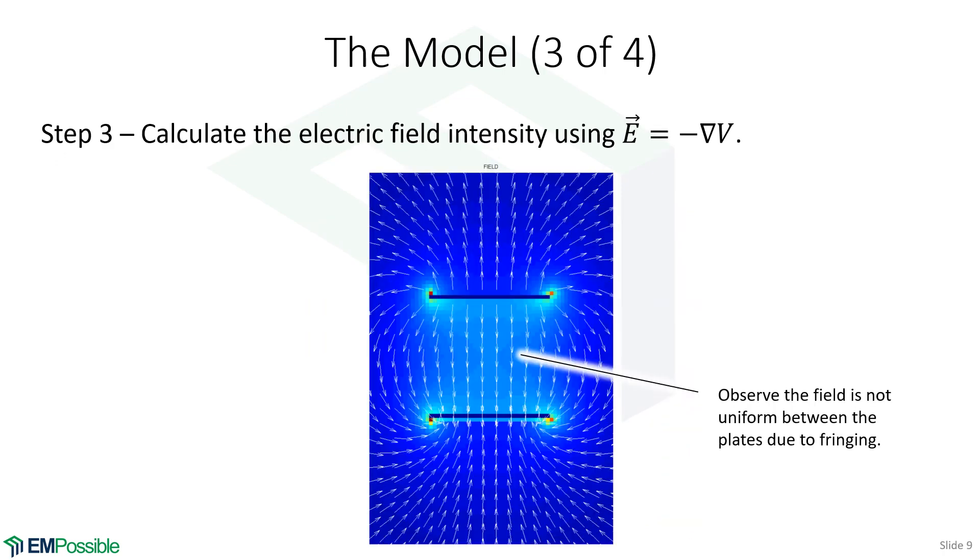Once I know the electric potential, I can calculate the negative gradient and then calculate the electric field. So between the plates, it is relatively uniform, but you'll notice it is definitely not uniform. If you look at the field near the edges but still between the plate, these fields are not completely vertical from plate to plate. They're starting to fringe already. And then, of course, we have all of this fringing field outside of the plates that our closed form analysis would completely ignore. So the picture here is different than what we've assumed for our simple closed form analysis, and that's very typical.